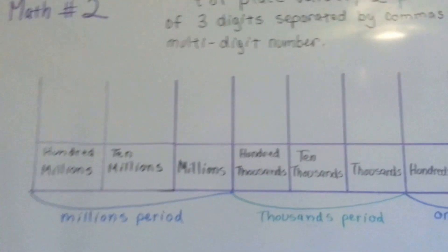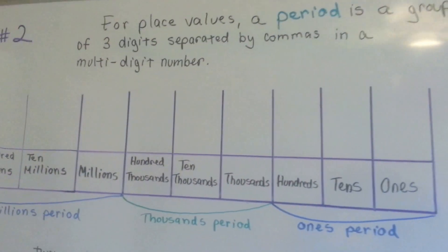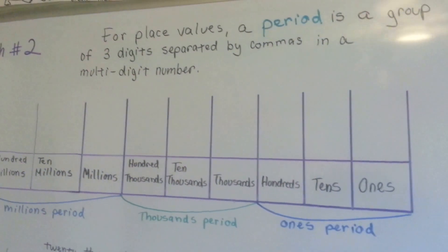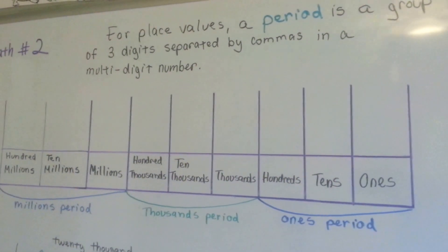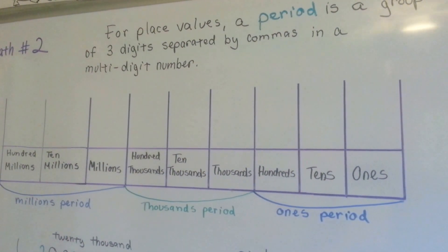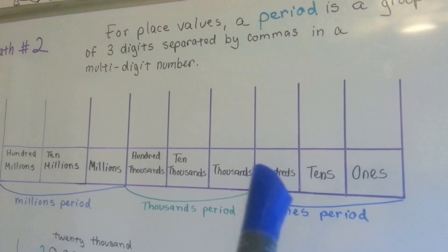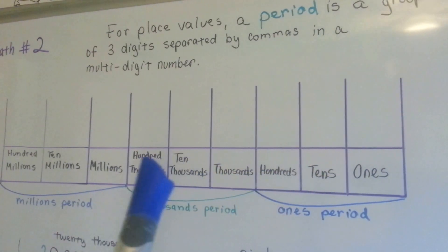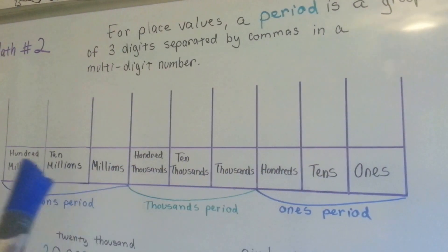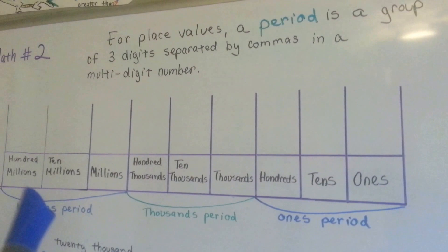We've been talking about place values. This chart goes up to hundred millions. We have ones, tens, hundreds, then all our thousands, then millions, ten millions, hundred millions.